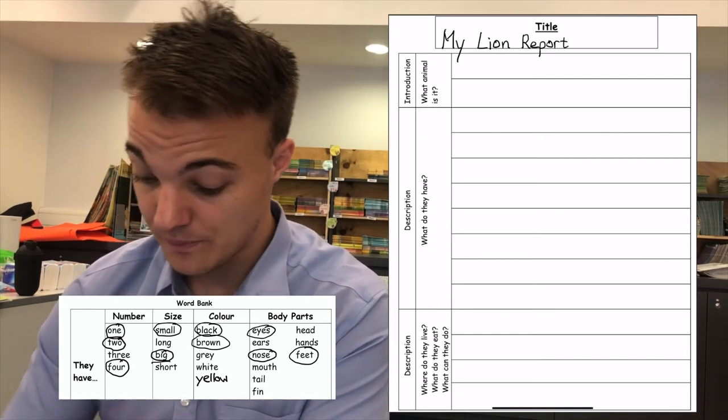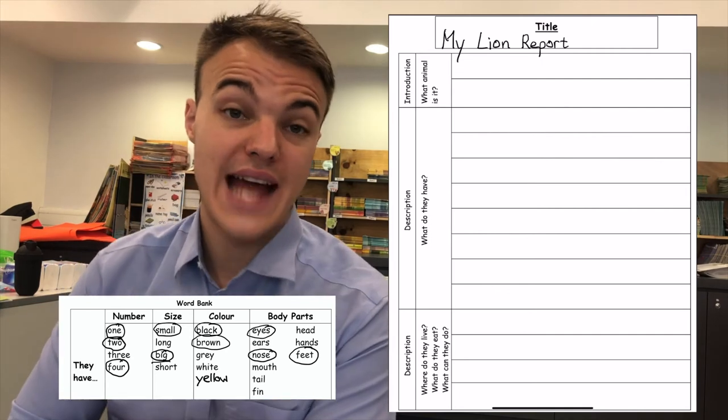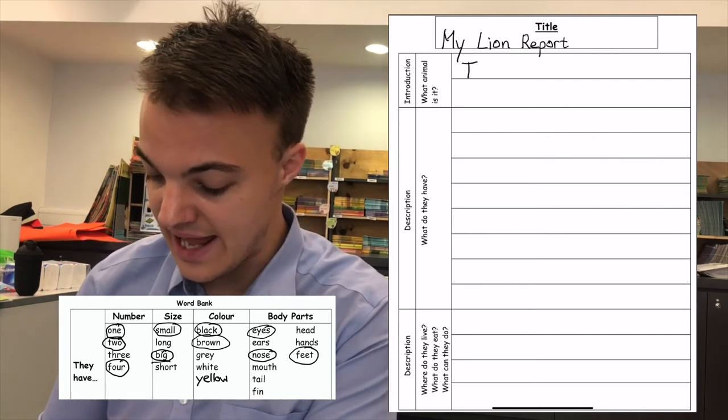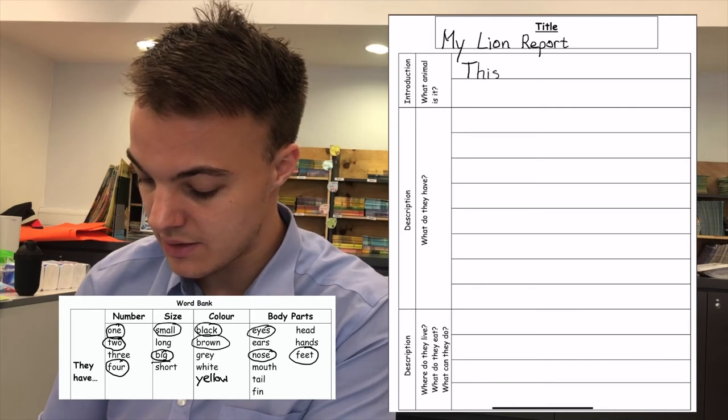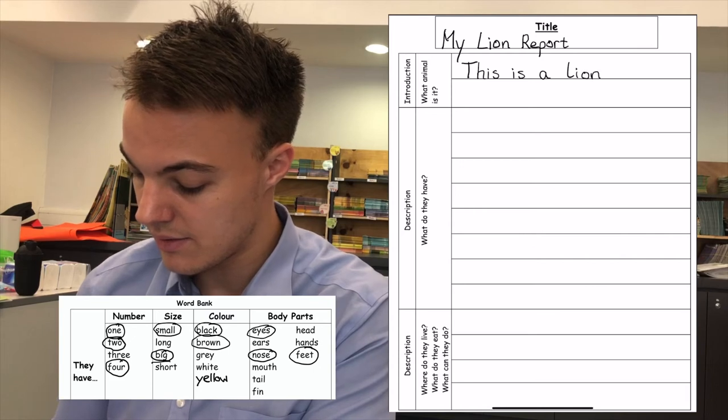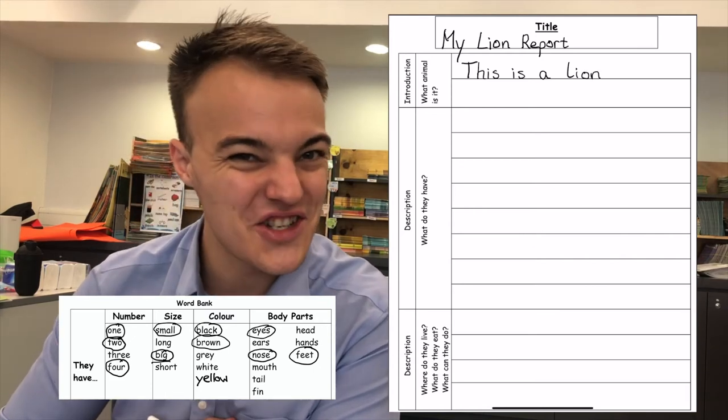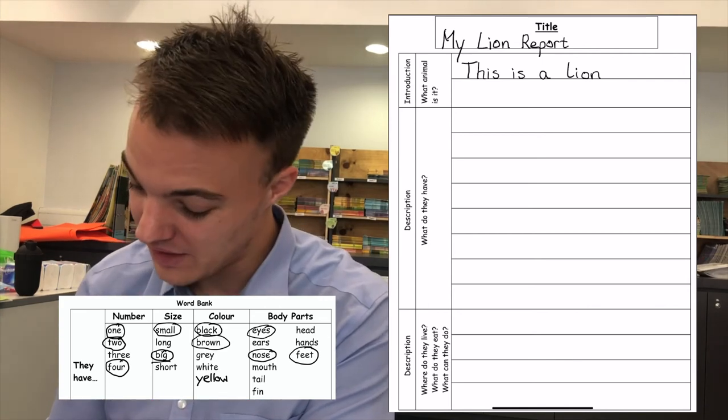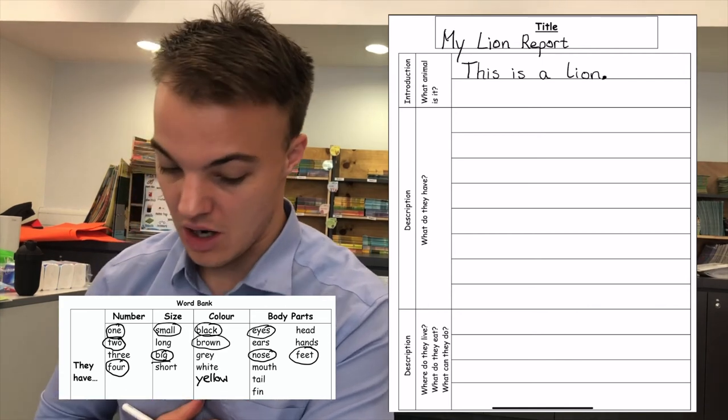Now. Introduction. What animal is it? This is a lion. P1, am I finished? No. I need a full stop. Full stop. Okay.